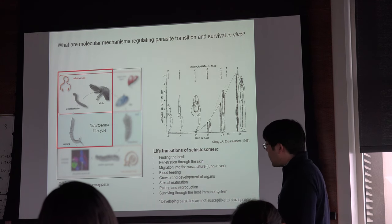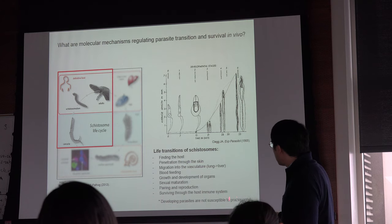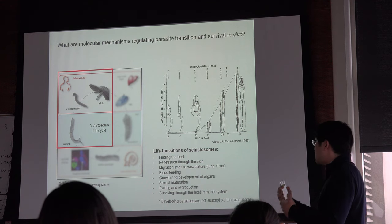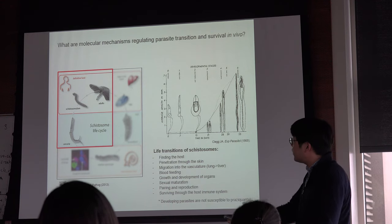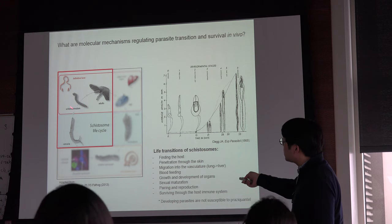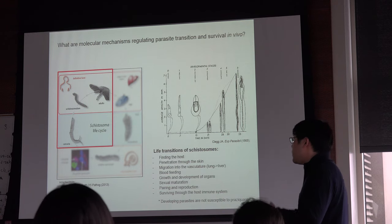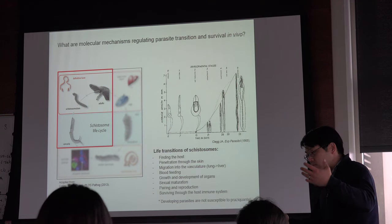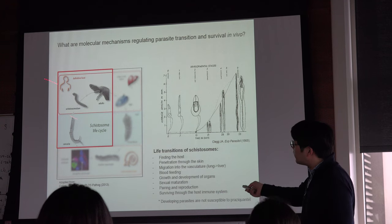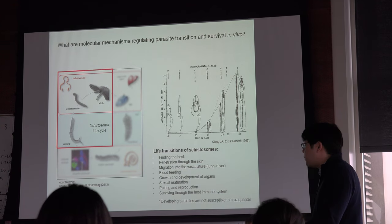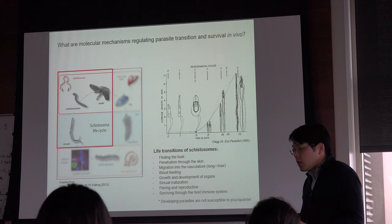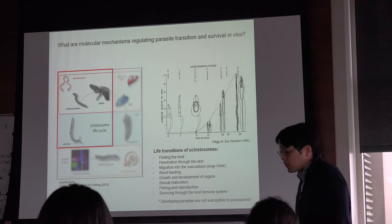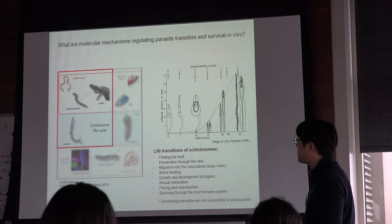In terms of the medical perspective, the drug praziquantel targets adult parasites, but it doesn't efficiently kill the juvenile stages or larval forms. This means that individuals living in endemic areas are constantly exposed to these infections, which praziquantel can't kill, so there is an urgent need for an alternative approach to targeting these parasites.